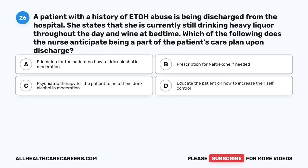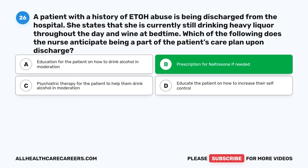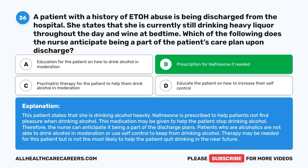Question twenty-six: A patient with a history of alcohol abuse is being discharged. She states she is currently drinking heavy liquor throughout the day and wine at bedtime. Which of the following does the nurse anticipate being part of the patient's care plan? A. Education on how to drink in moderation. B. Prescription for naltrexone if needed. C. Psychiatric therapy to help drink in moderation. D. Education on how to increase self-control. The correct answer is B, Prescription for naltrexone. Naltrexone is prescribed to help patients not find pleasure when drinking alcohol and may help the patient stop drinking. Alcoholics are not able to drink in moderation or use self-control.